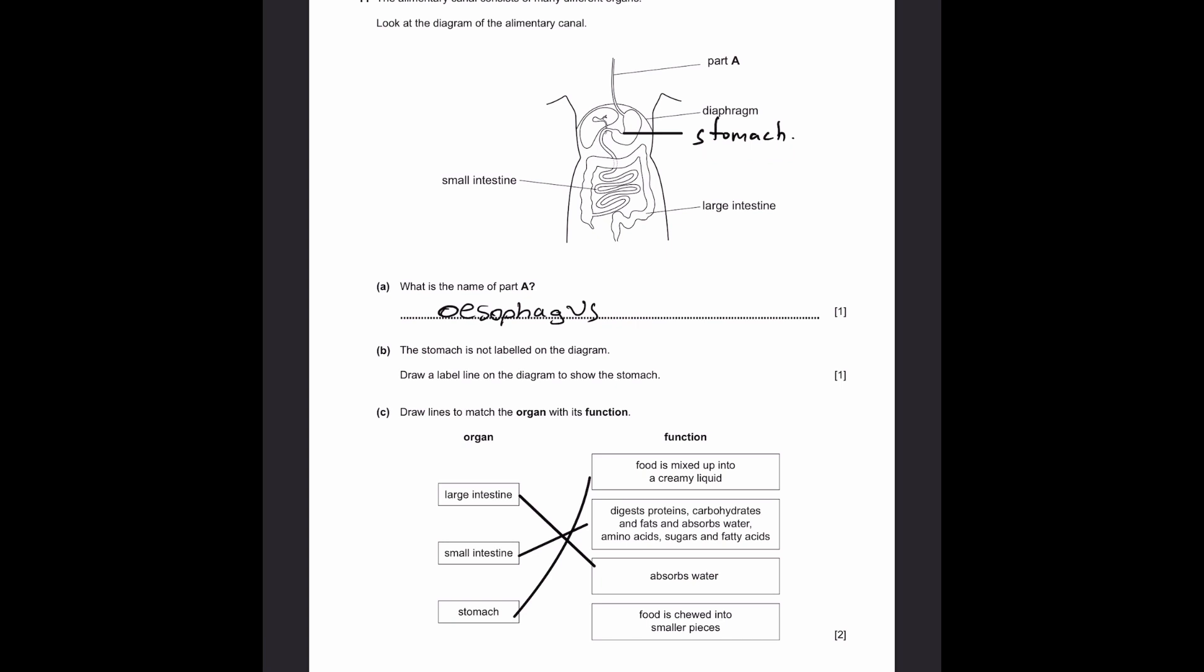Part C. Draw lines to match the organ with its function. The large intestine absorbs water. The small intestine digests proteins, carbohydrates, fats and absorbs nutrients and water. The stomach mixes food into a creamy liquid. Food is chewed into smaller pieces does not come under any of these organs, it is actually the mouth.